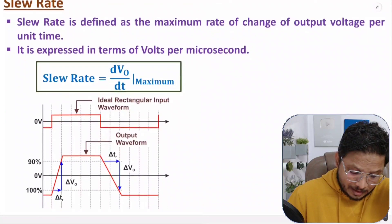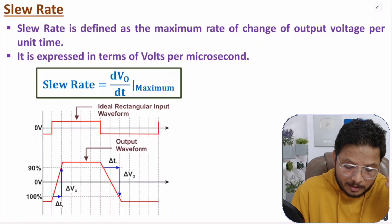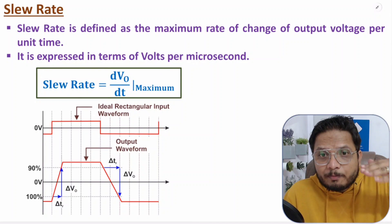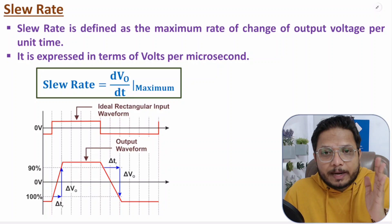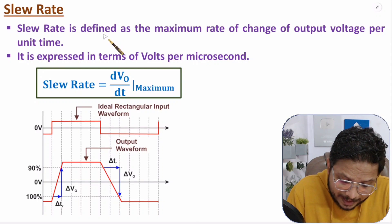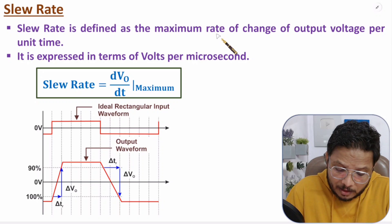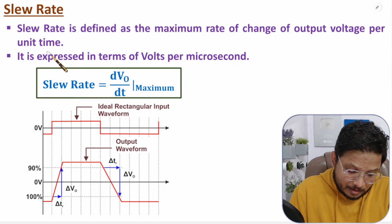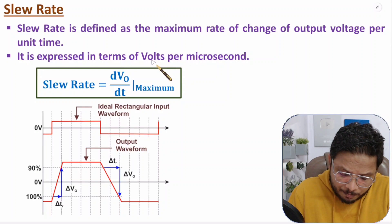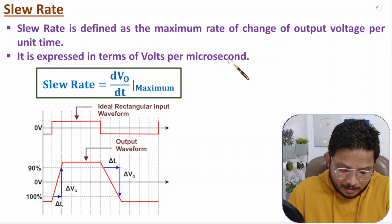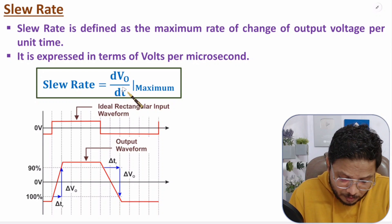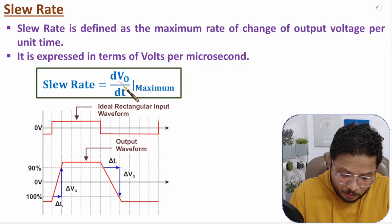The last definition is slew rate. Slew rate explains how the output is changing with respect to time. Slew rate is defined as the maximum rate of change of output voltage per unit time. We usually express it in terms of volts per microsecond. Slew rate is the rate of change of output with respect to time, and we consider the maximum value.